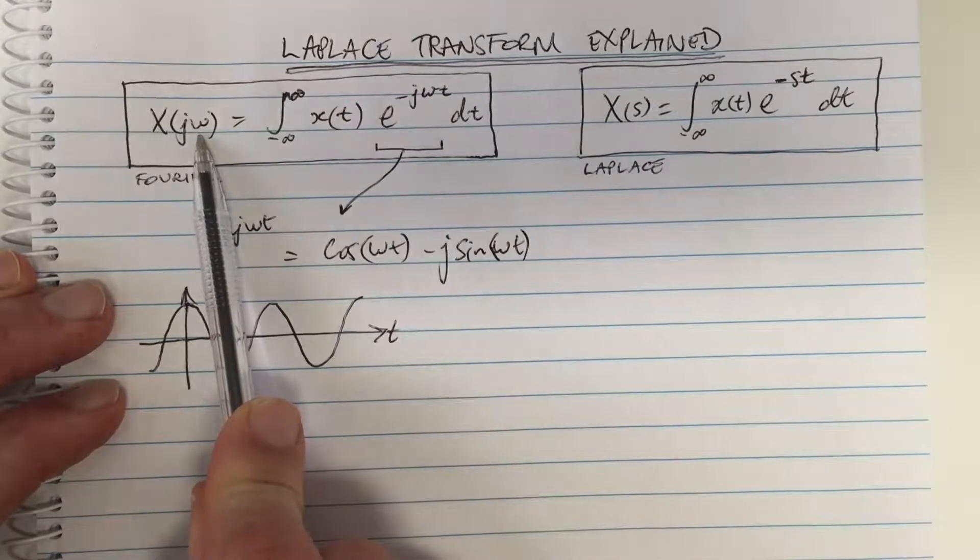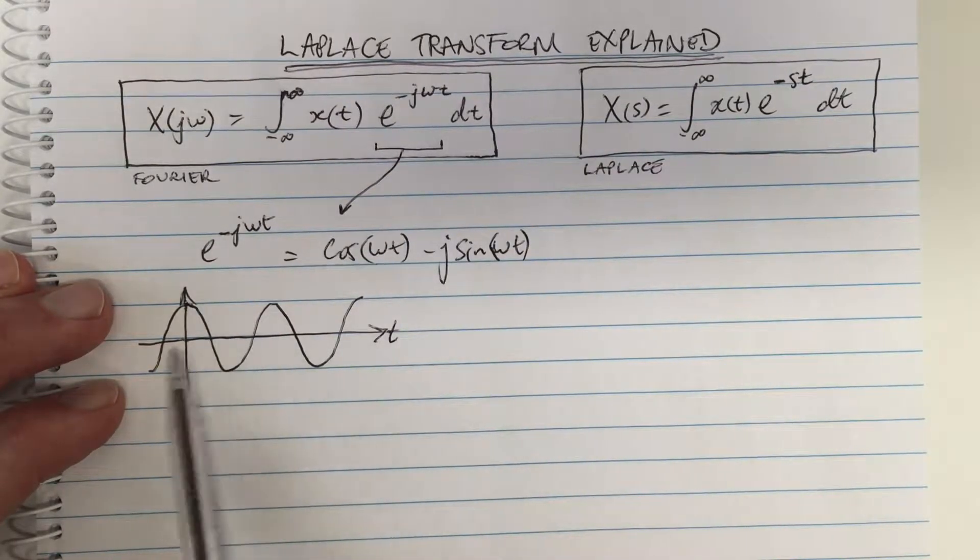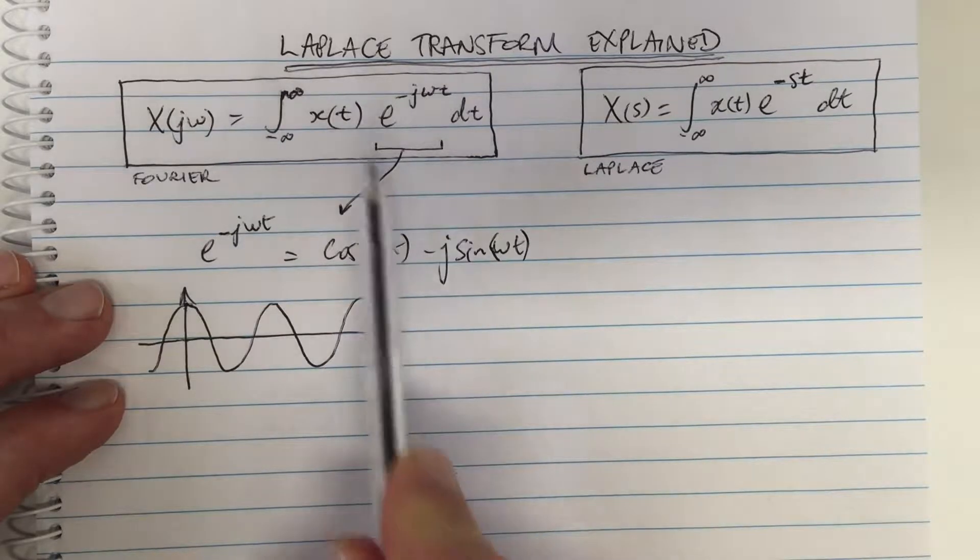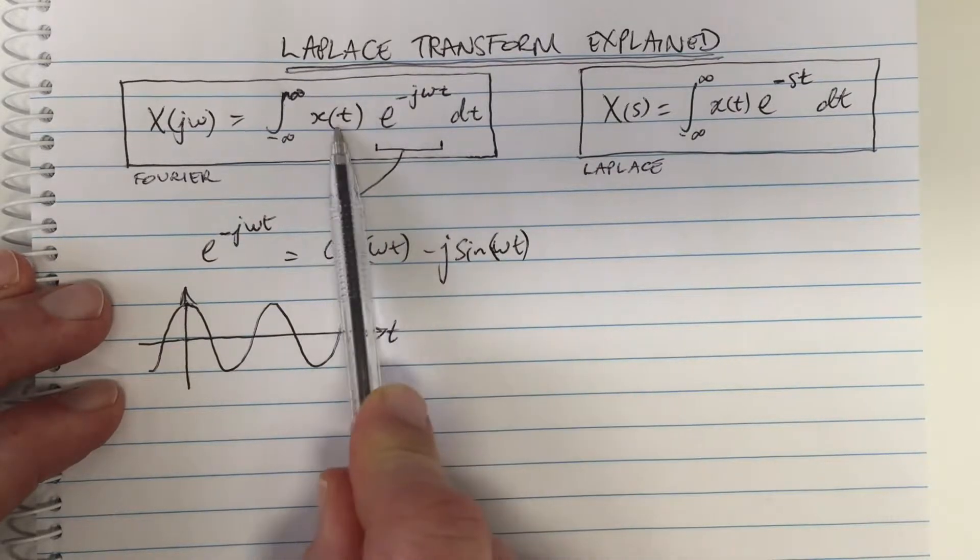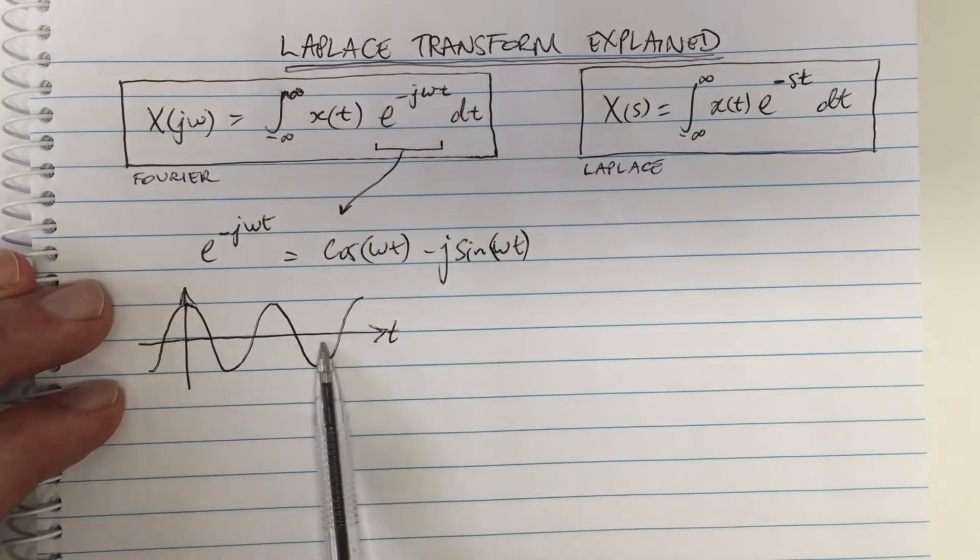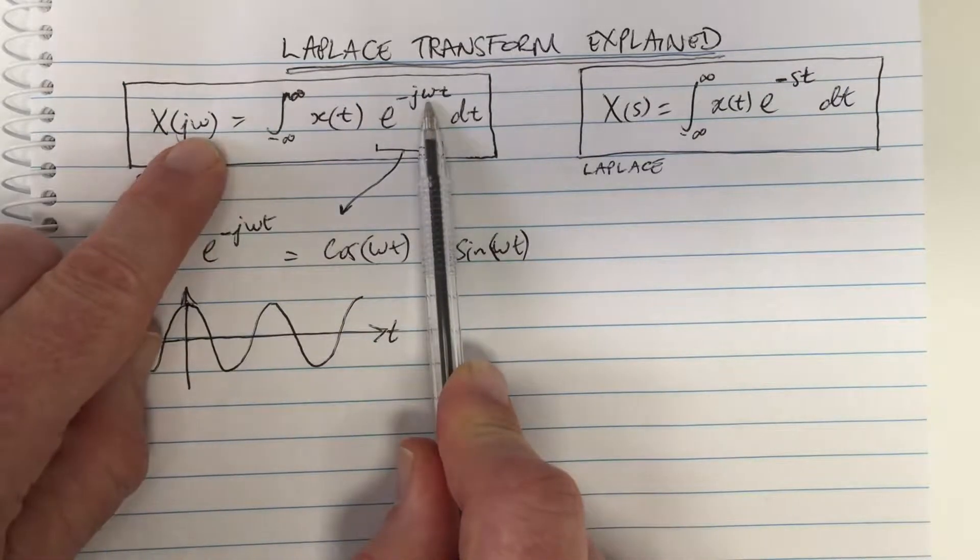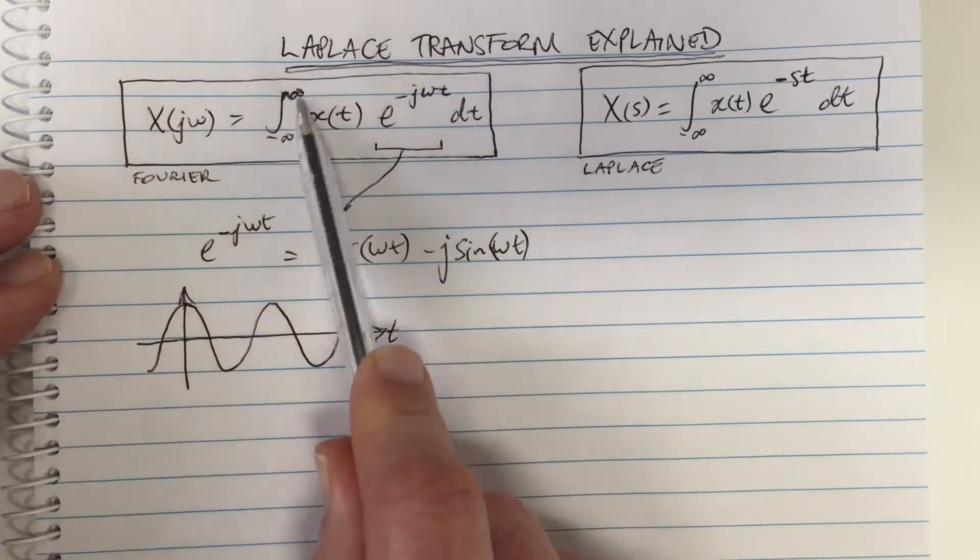There'll be higher frequency or lower frequency, and you multiply your signal by these basis functions. You do a different one for each different value of ω, and you integrate over time to find out the projection of your signal onto that basis function.